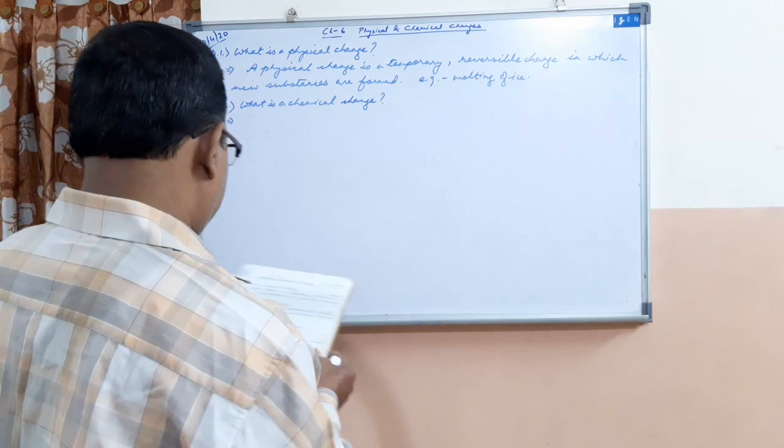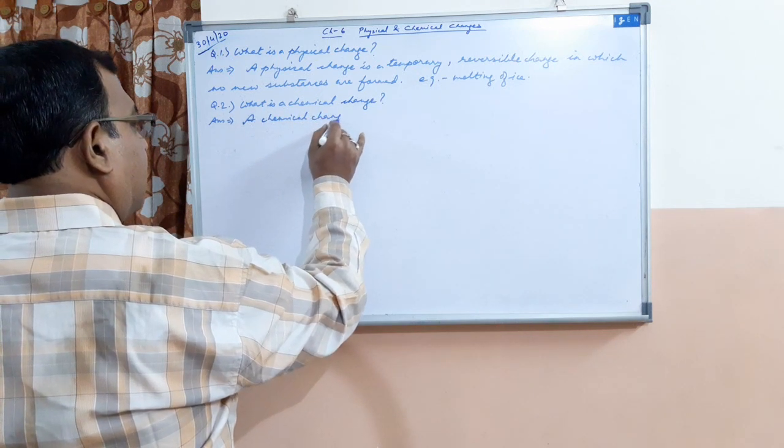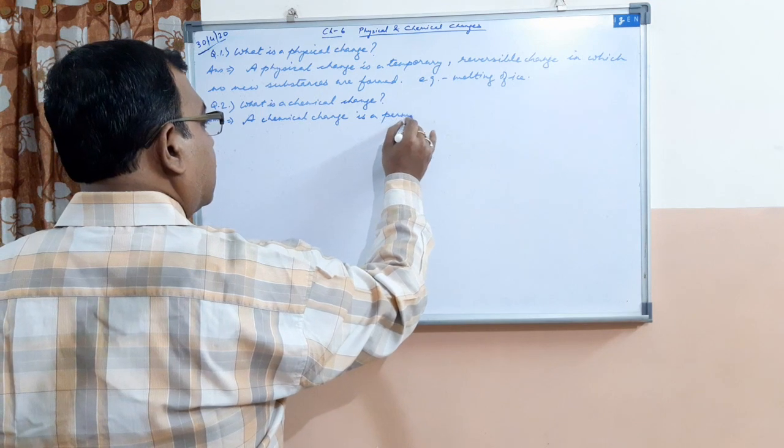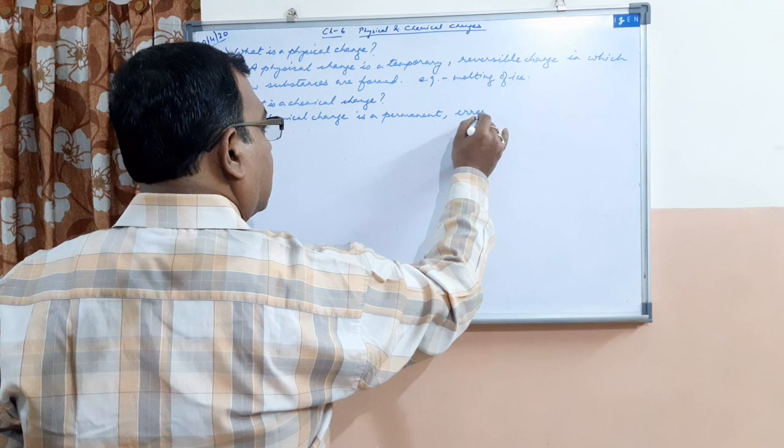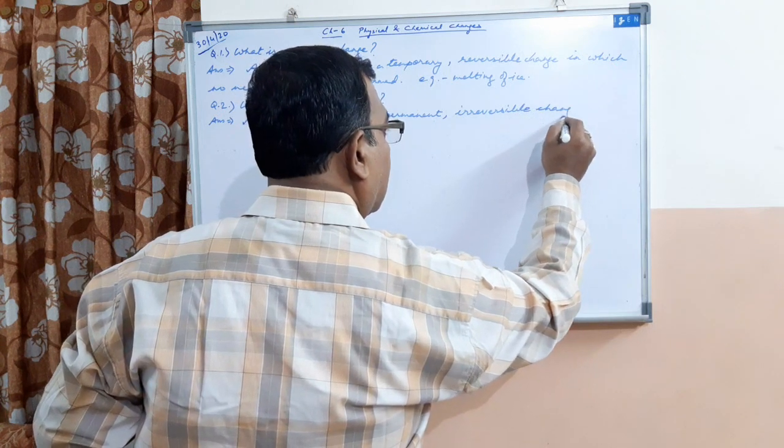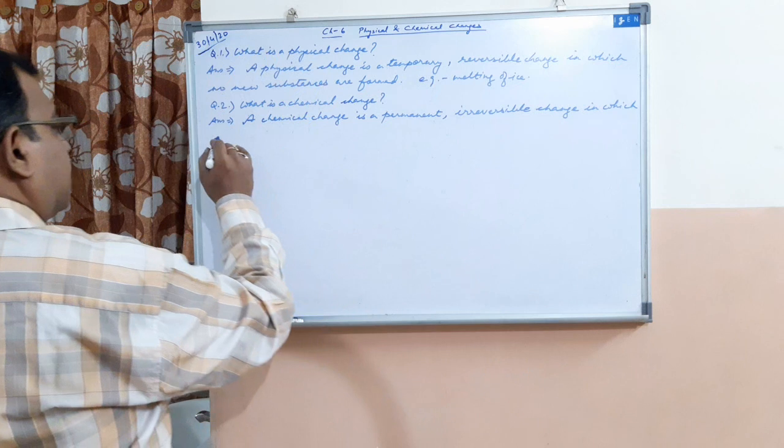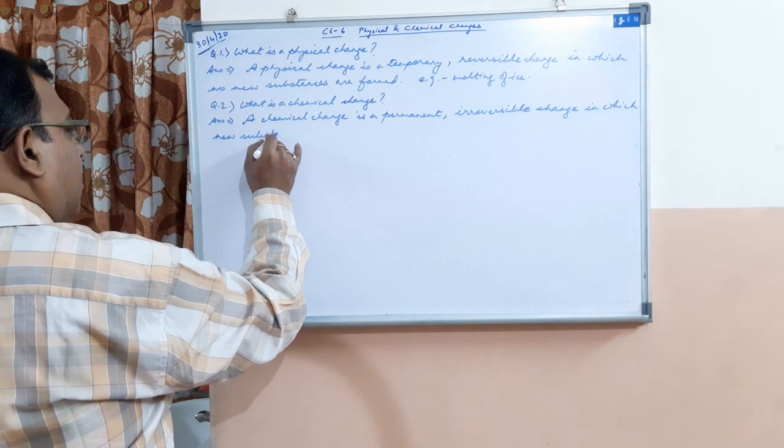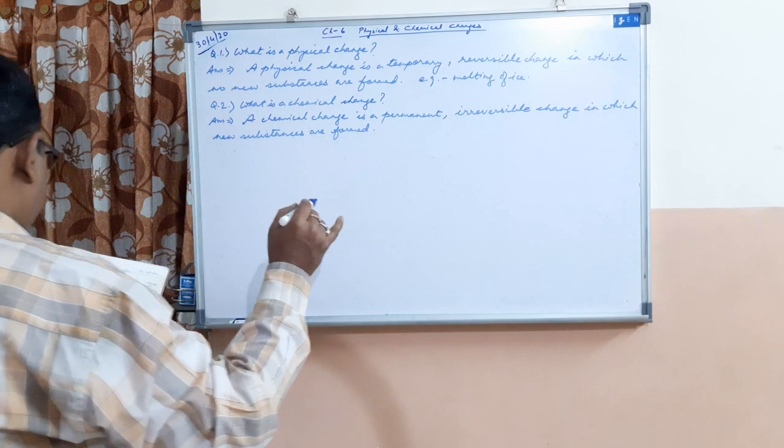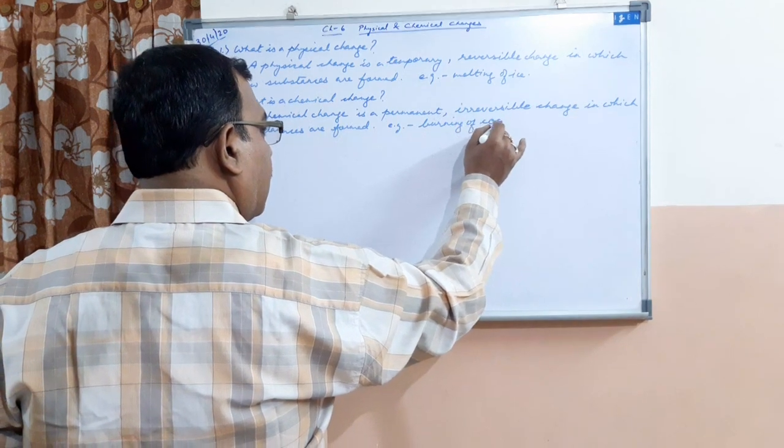Second question. What is a chemical change? A chemical change is a permanent irreversible change in which new substances are formed. Example: burning of coal.